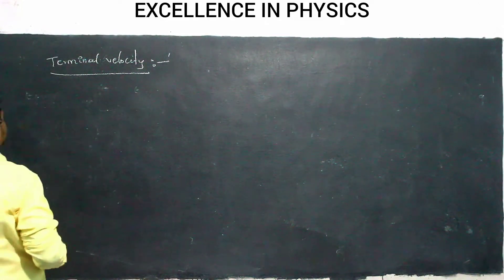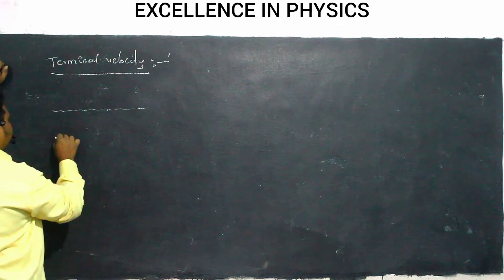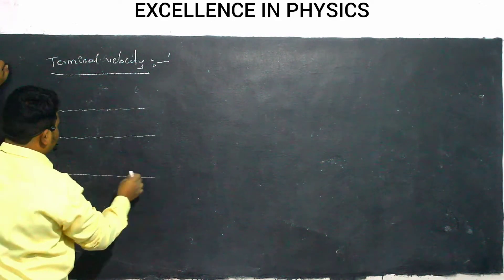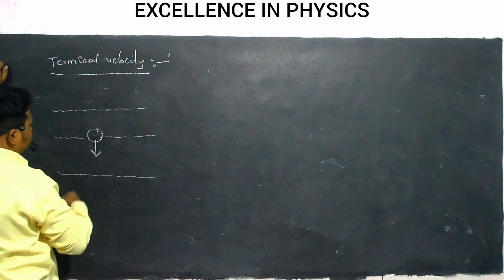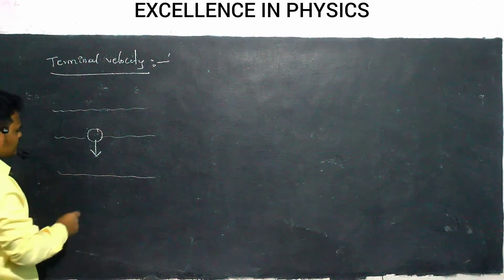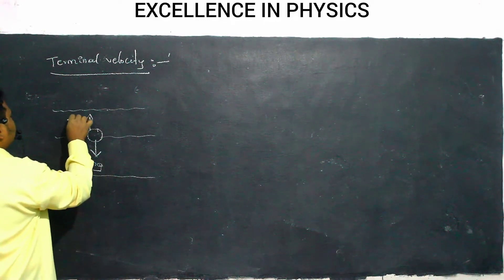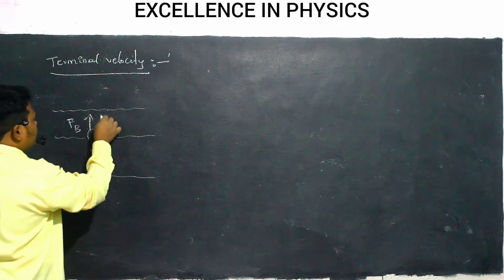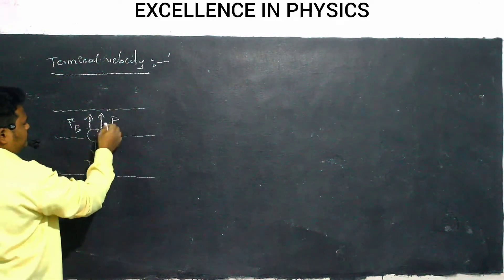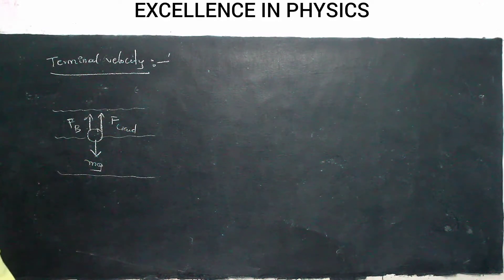Consider any liquid or fluid, with a body falling down through it. How many forces will be acting on it? First, the weight of the body acts downwards — m×g. Then the force of buoyancy acts upward. And friction due to the fluid, also called viscous drag, is also acting.